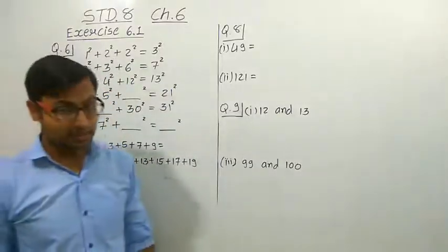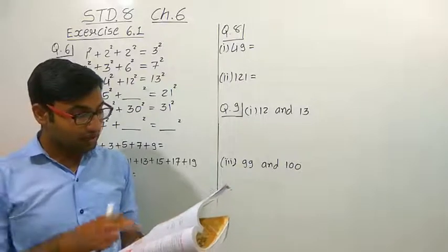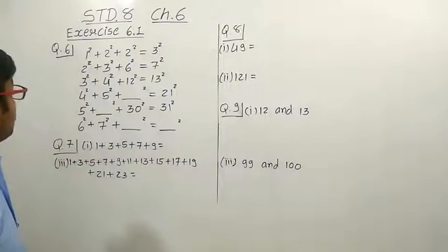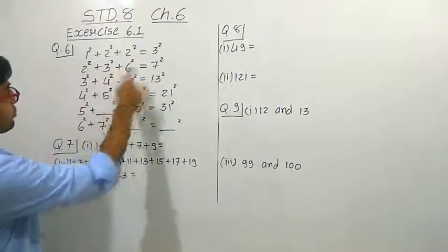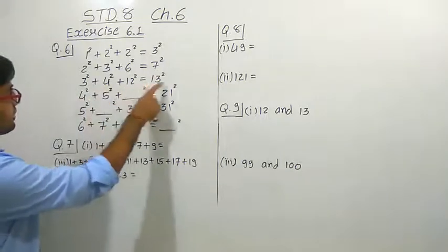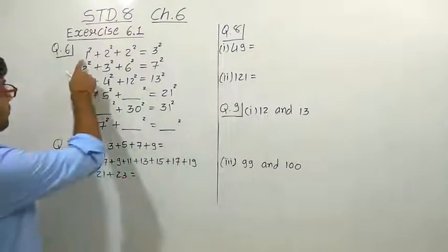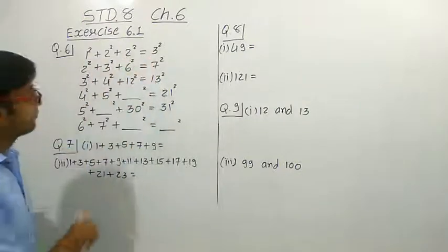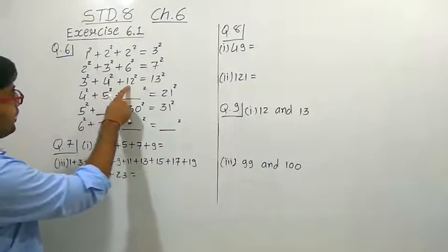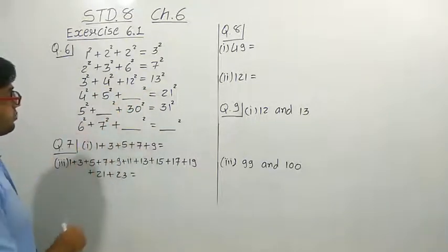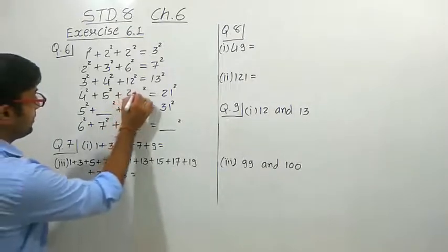Let us study question number 6: using the given pattern, find the missing numbers. We have given: 1² + 2² + 2² = 3², 2² + 3² + 6² = 7², 3² + 4² + 12² = 13². From these three lines, we can understand that 1 × 2 = 2, and 2 + 1 = 3; 2 × 3 = 6, and 6 + 1 = 7; 3 × 4 = 12, and 12 + 1 = 13. So the missing number for the next line: 4 × 5 = 20, so what must be there is 20.